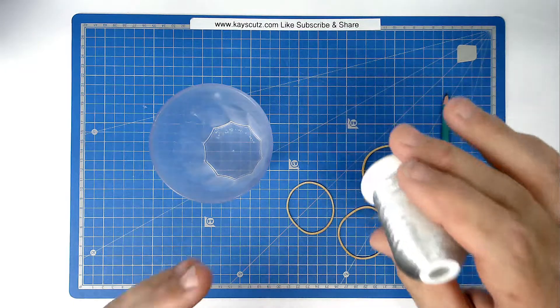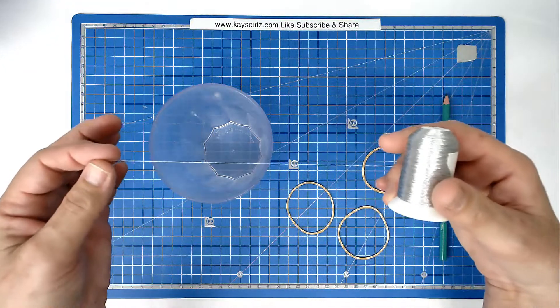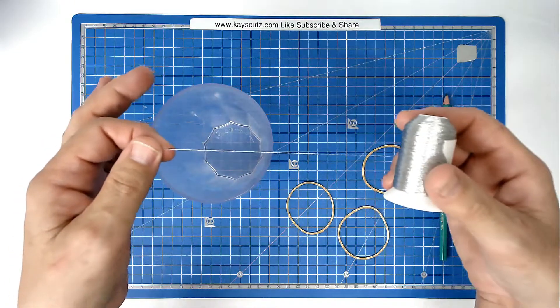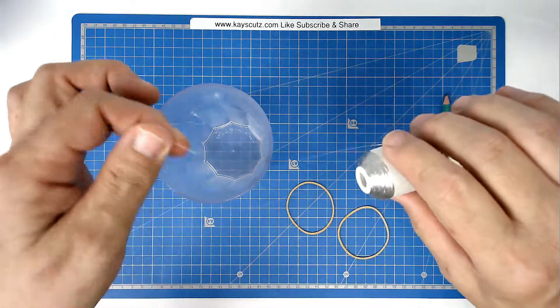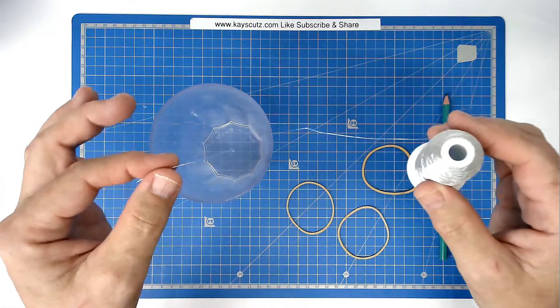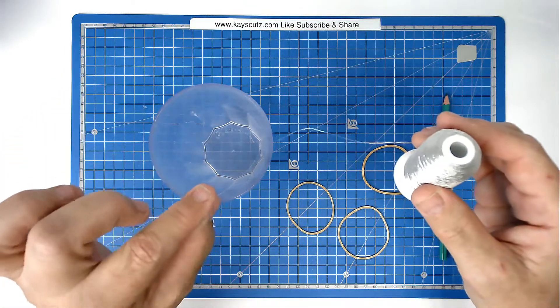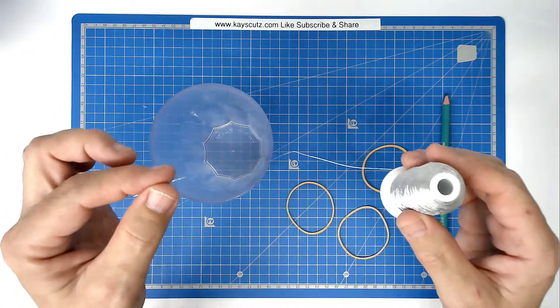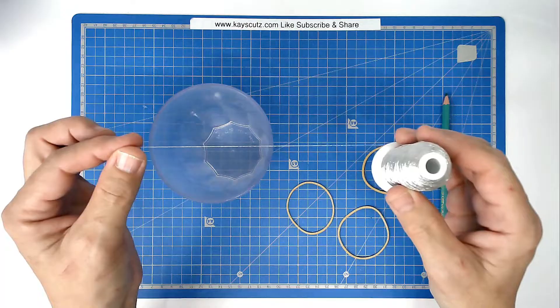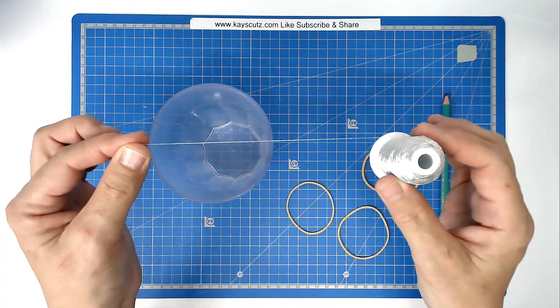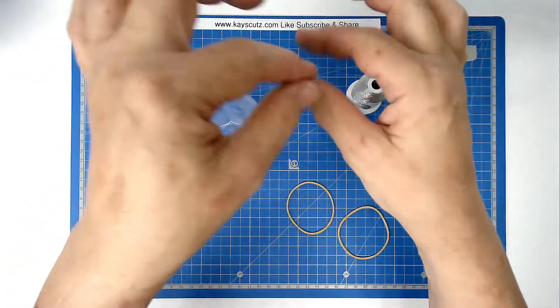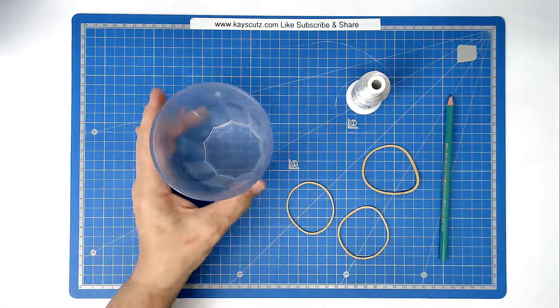Then we want to make sure that for our thread, the thread comes off of the spool like this rather than like this where it will twist. If it twists it can cause a kink in the thread and then that will block as it goes through the eye of the needle and it can break your needle or you end up with your thread shredding. So the easy solution is to use a thread stand and that's what we're going to make.